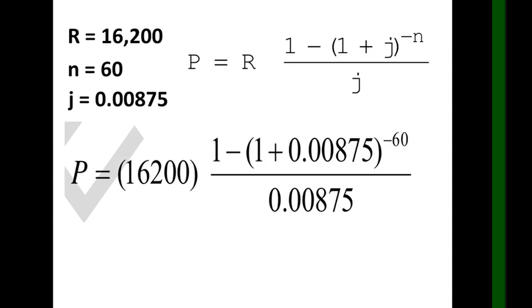Then divide by 0.00875. Then click equals. Then multiply by 16,200. Then click equals.